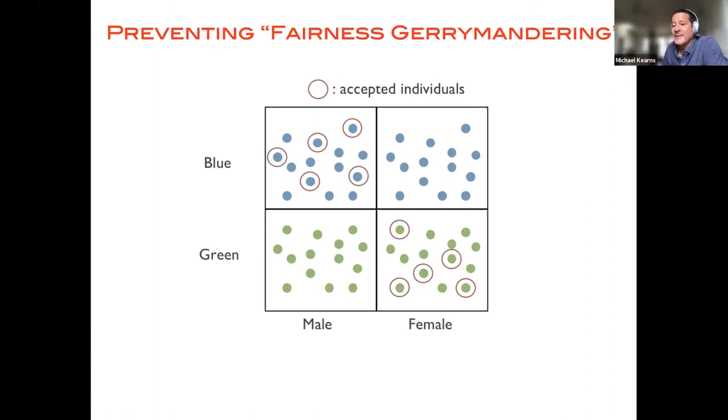So imagine a setting where the pure strategies of the learner or the primal player are the models in your class, right, the neural networks in your parametric family. Okay. And the pure strategies of the regulator are your fairness constraints, and I'm about to give an example where there would be a very large number of those, but we can come to that in a second. Okay. So basically what happens right is in round one, the learner just says I'm taking the neural network which minimizes the training error. And then the regulator says, Okay, that model has a false rejection rate on black people that is twice as high as on white people. And that violates one of the fairness constraints. You have to fix it.